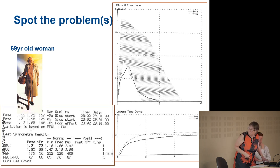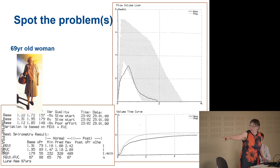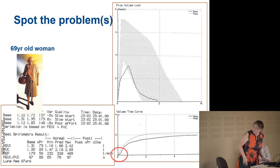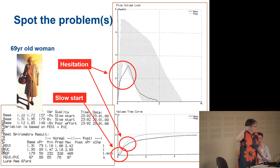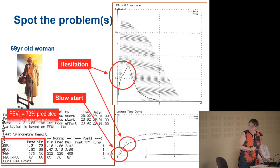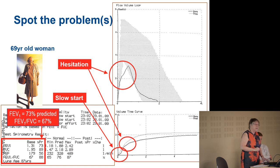What's wrong with that? There's a slow start down at the bottom — they sort of did a bit, then hesitated a bit. It's not a nice clean forced breath, is it? All of which will reduce the FEV1, so it'll look as though they've got a lower FEV1 than they actually have. It says here that the FEV1 is 73% predicted — I bet it's more than that, may well be normal.